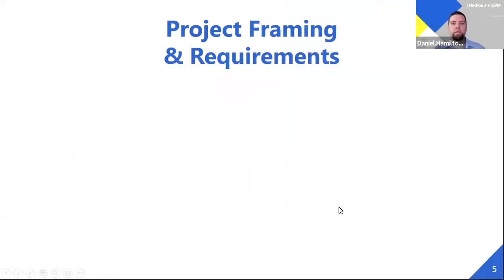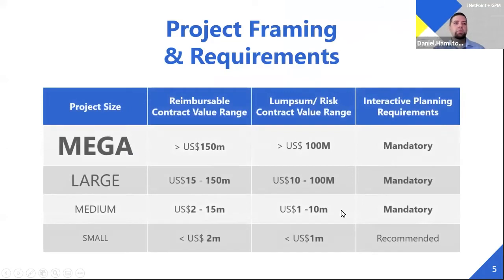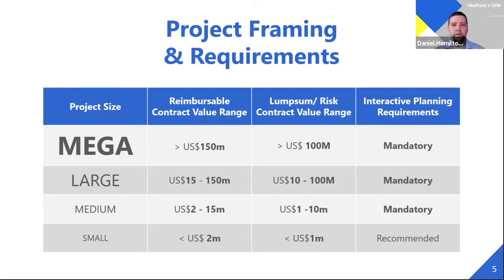This is project framing and requirements. This slide represents framing and requirements for projects to conduct interactive planning sessions. Worley has four separate project criteria, defined by project contract value or project risk. For major mega projects, anything greater than $150 million reimbursable contract value or greater than $100 million lump sum, it's required to do interactive planning sessions. That is a mandatory project selection.